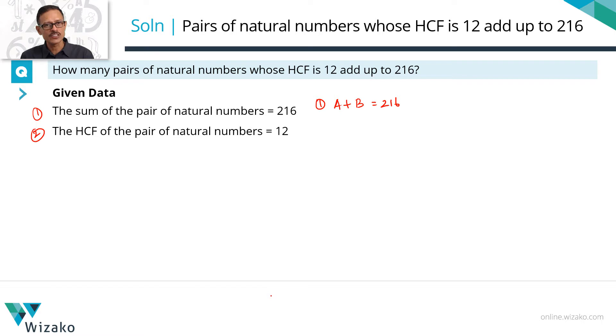Which means that 12 is the factor of A, 12 is the factor of B. So the second condition we'll write this way: 12 divides A, 12 divides B. Or in other words, A is divisible by 12, B is divisible by 12.